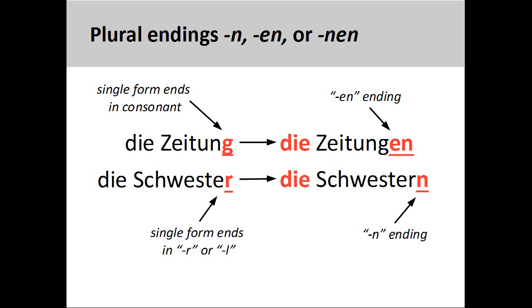However, if the consonant is either L or R, such as Schwester, sister, then only -n is added: Schwestern.